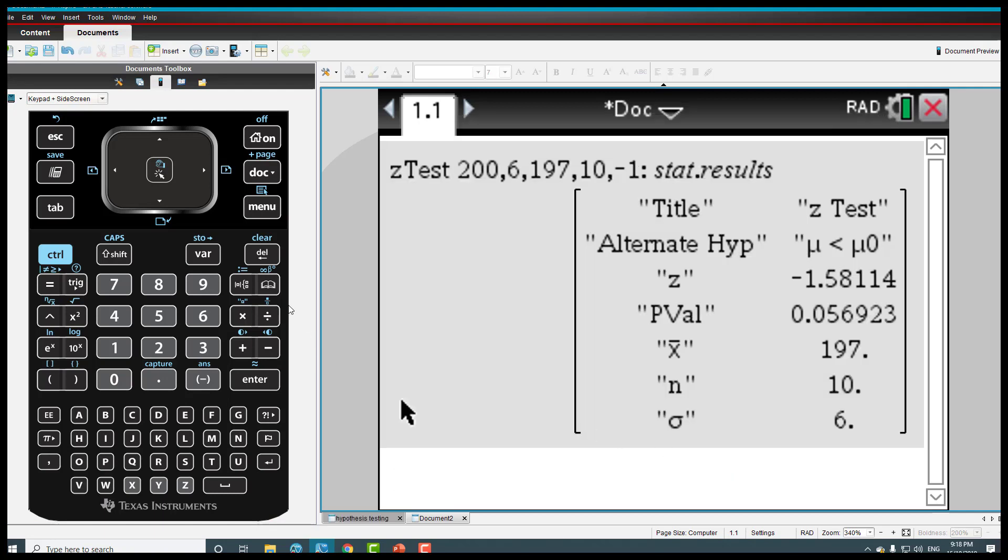We see that the p-value 0.056 is higher than 0.05. Based on that, we actually accept the null hypothesis and reject the alternative hypothesis.